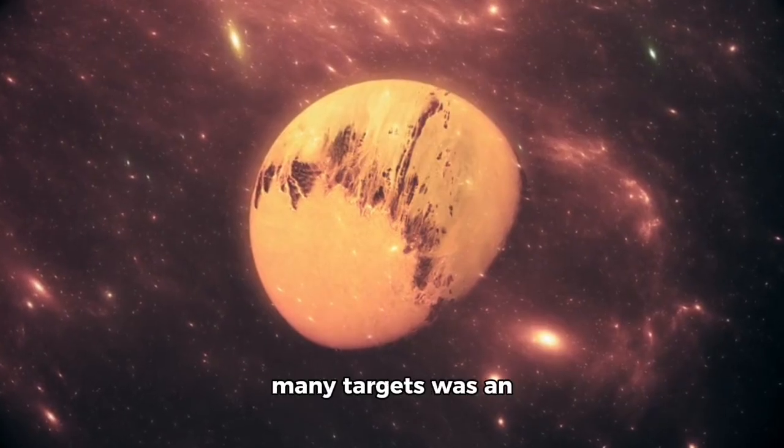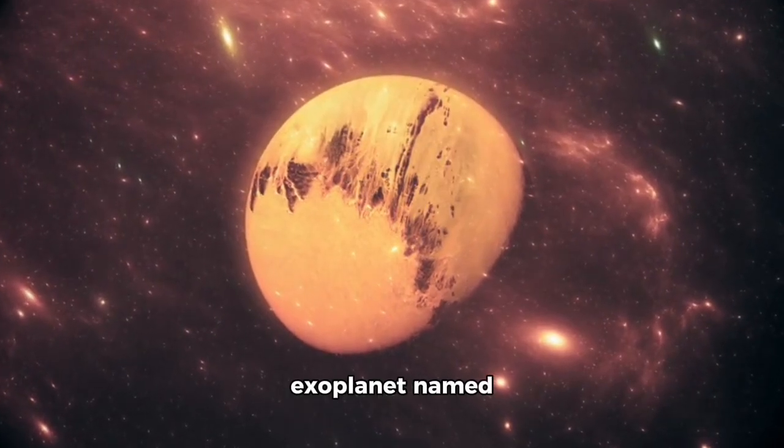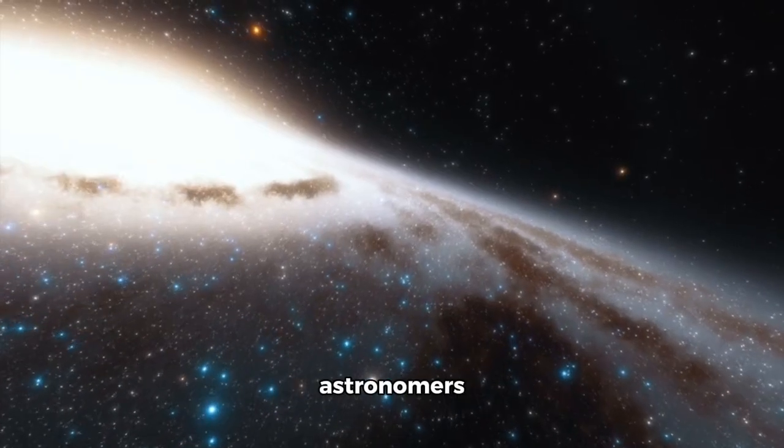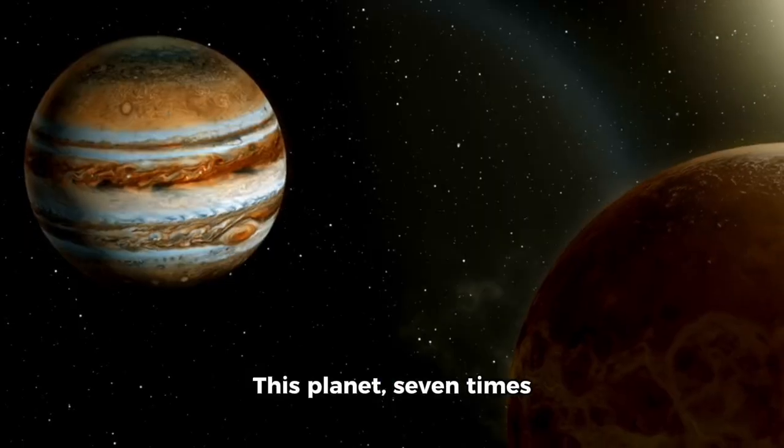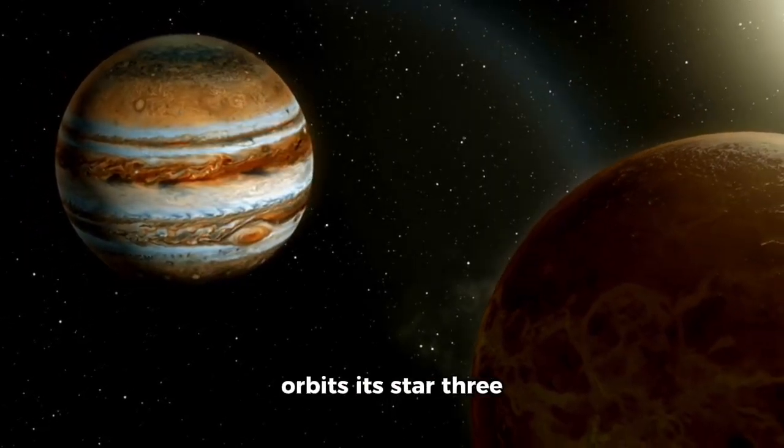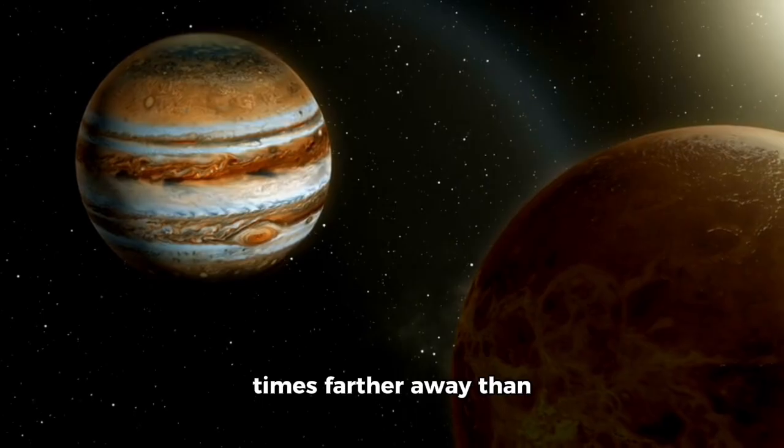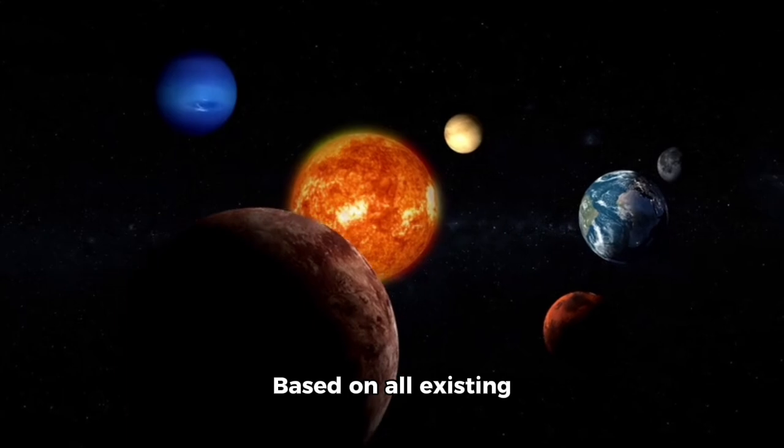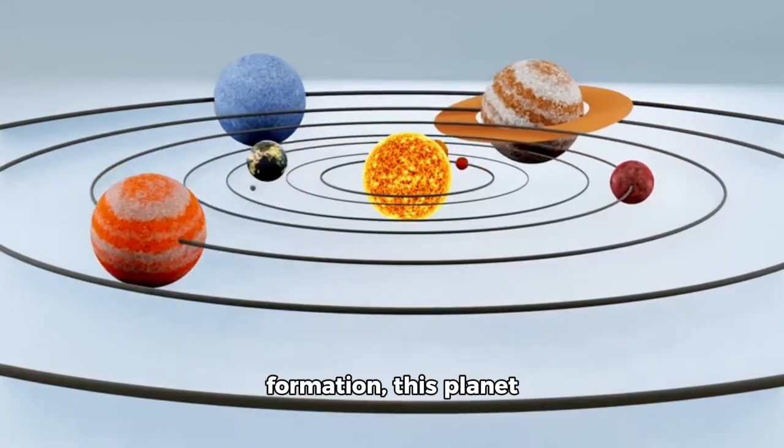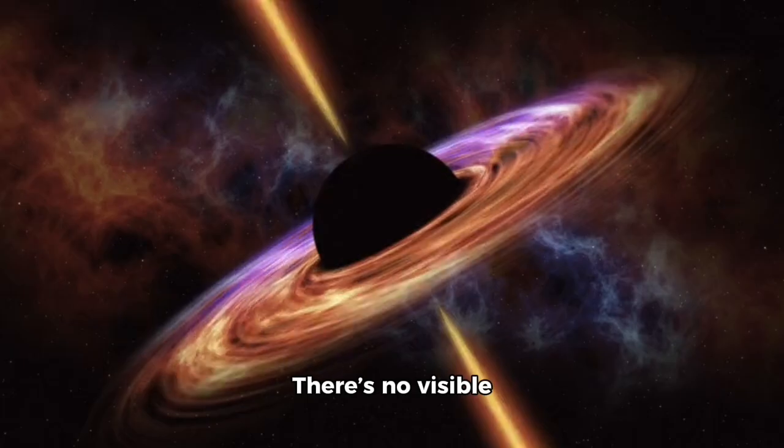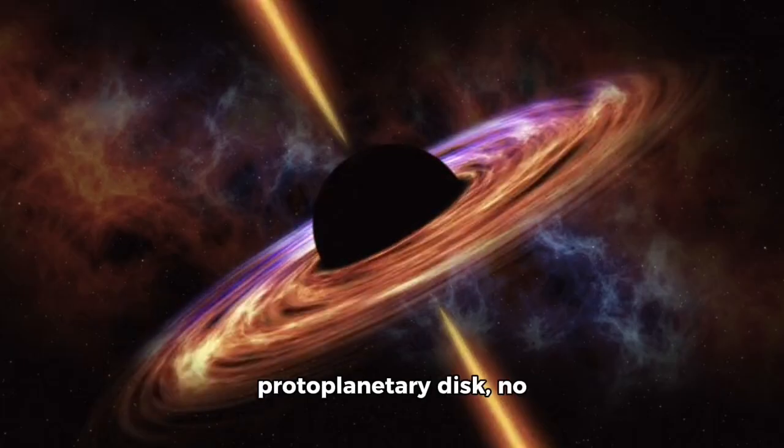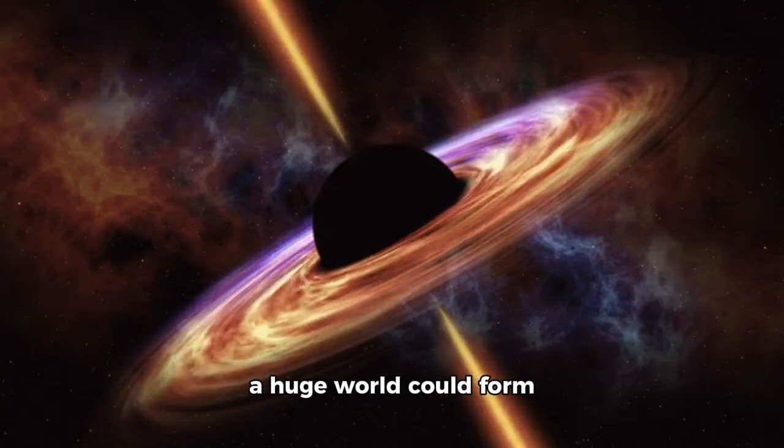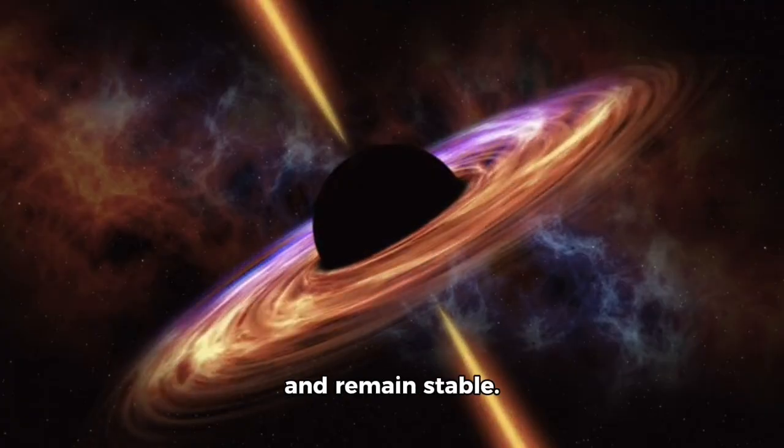Among James Webb's many targets was an exoplanet named HIP 65426b, located hundreds of light years away. What it revealed left astronomers perplexed, speechless. This planet, seven times the mass of Jupiter, orbits its star three times farther away than Neptune and exists around a star barely 15 million years old. Based on all existing hypotheses of planet formation, this planet ought not to exist. There's no visible protoplanetary disk, no residual material, no gravitational explanation for how such a huge world could form so far out, so quickly, and remain stable.